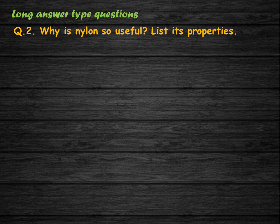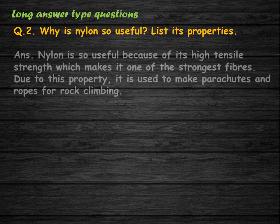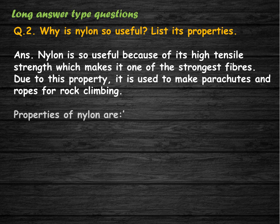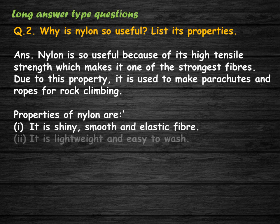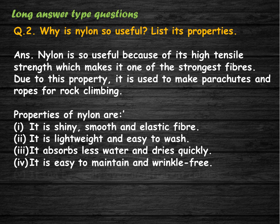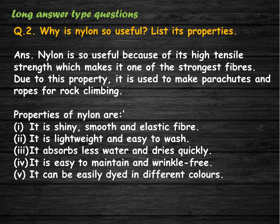Why is nylon so useful? List its properties. Nylon is useful because of its high tensile strength, which makes it one of the strongest fibers; due to this it is used to make parachutes and ropes for rock climbing. Properties of nylon: it is a shiny, smooth, and elastic fiber; lightweight and easy to wash; absorbs less water and dries quickly; easy to maintain, wrinkle-free; and can be easily dyed in different colors.